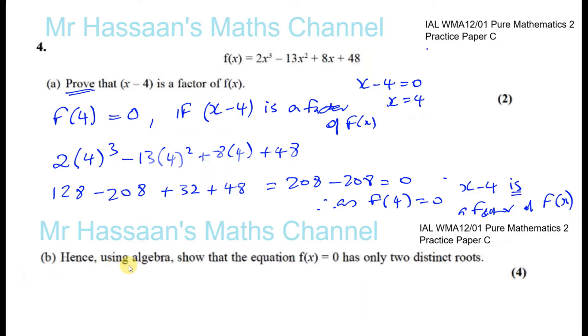Okay, so for part (b), hence using algebra show that the equation f(x) equals 0 has only two distinct roots. So basically what we know is x minus 4 is a factor of this. So we want to basically show that if you factorize it fully, you will only end up with two distinct roots when you try to solve the equation. One method we could use is long division. So we know that x minus 4 is one factor, so I can write x minus 4 and set up my long division.